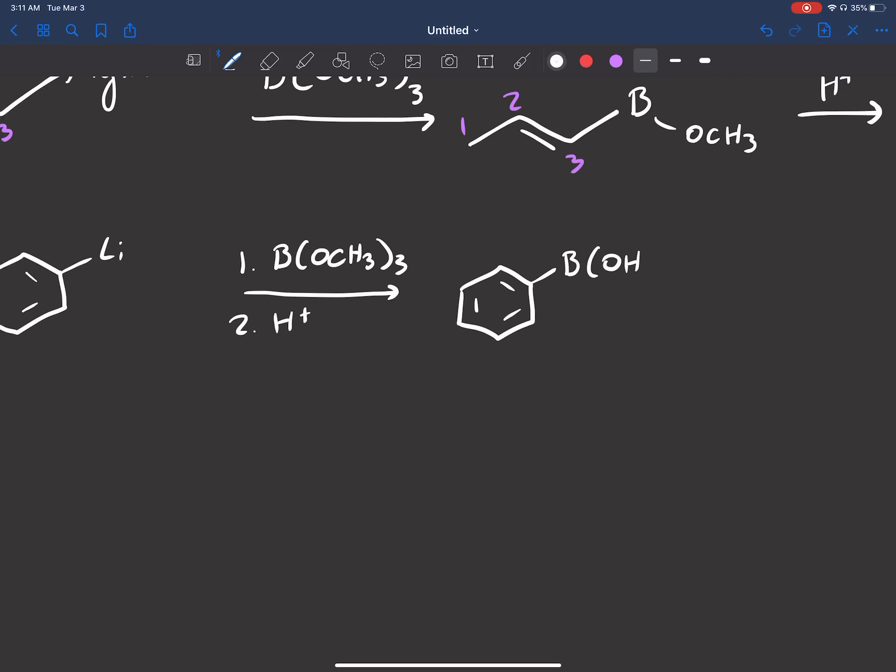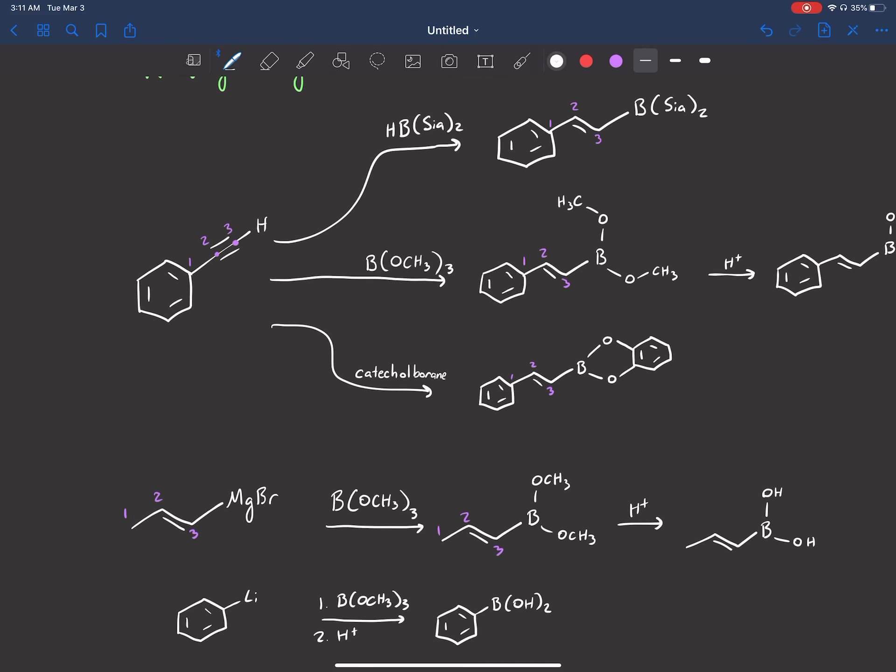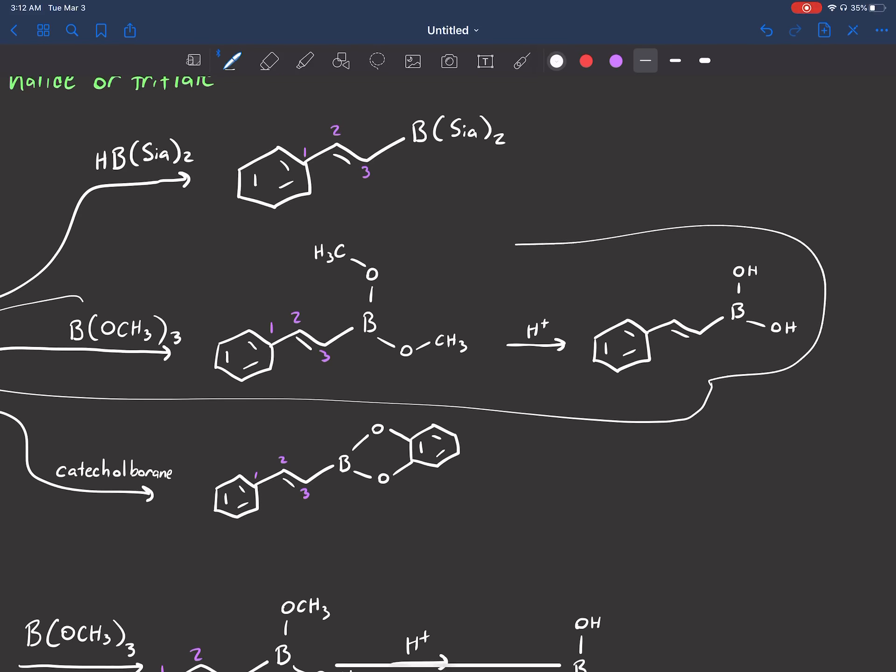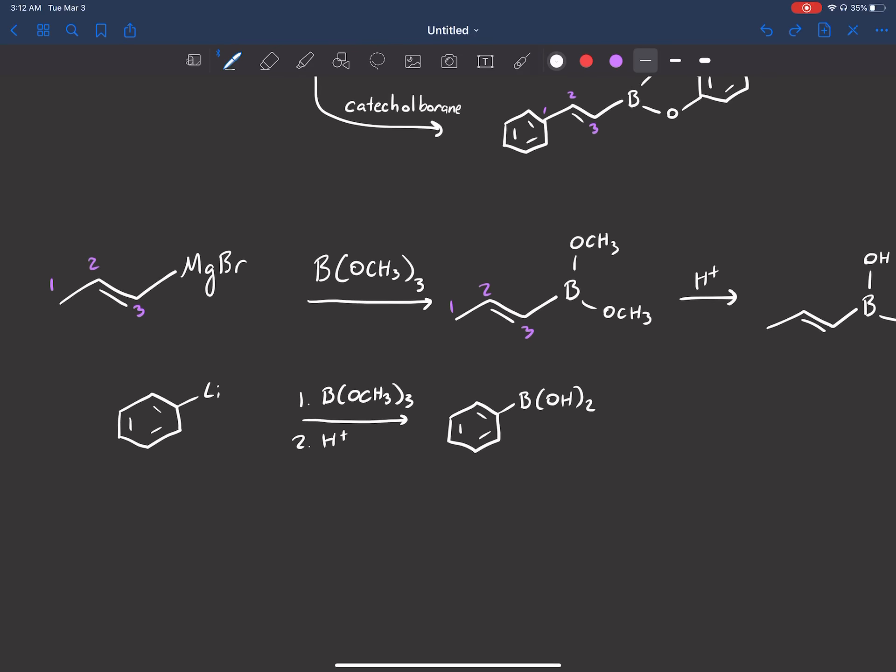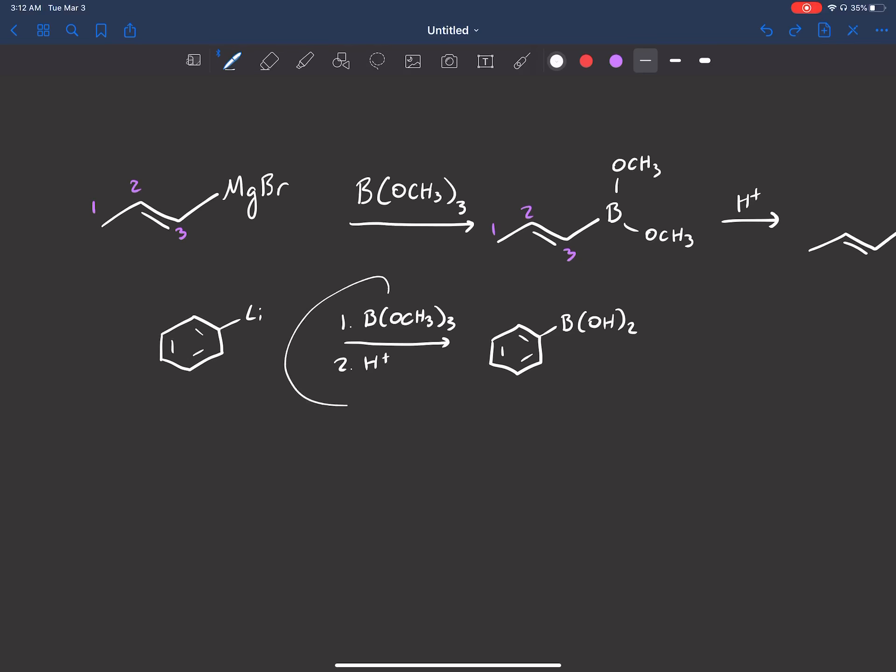And we can go straight to our product - boron, two OHs. So when I did Suzuki, I feel like it's probably just easiest to stick with these middle reagents. They're probably just the simplest rather than catecholborane or disiamylborane. So on a synthesis, I just stick with this right here, and we get our boronic acid.